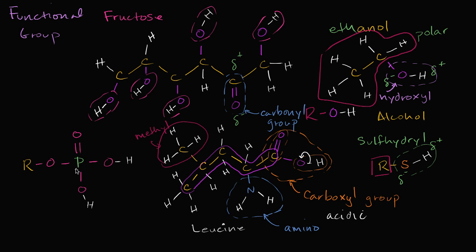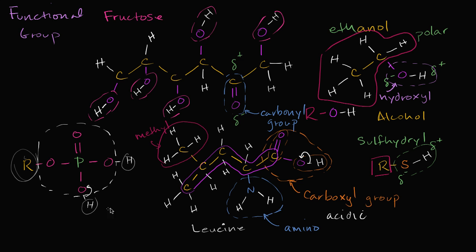The last group we'll focus on is the phosphate group, which you'll see a lot in biology — as part of ATP and as the backbone of DNA. The phosphate group here is drawn bonded to a carbon chain and two hydrogens. When it is bound to hydrogens like this, it's considered protonated, and it can hog those electrons and dump the hydrogens into solution. So a phosphate group is considered acidic because it can donate protons.